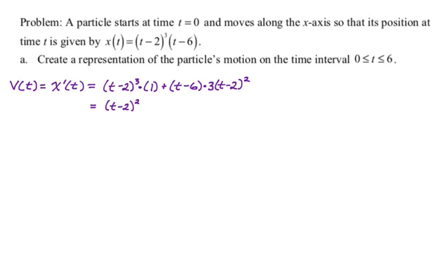I'm going to factor this a bunch. So I can take out (t minus 2) squared. That leaves me with a (t minus 2) here and then three times (t minus 6). So 3t minus 18. And we can collect some stuff to get 4t minus 20.